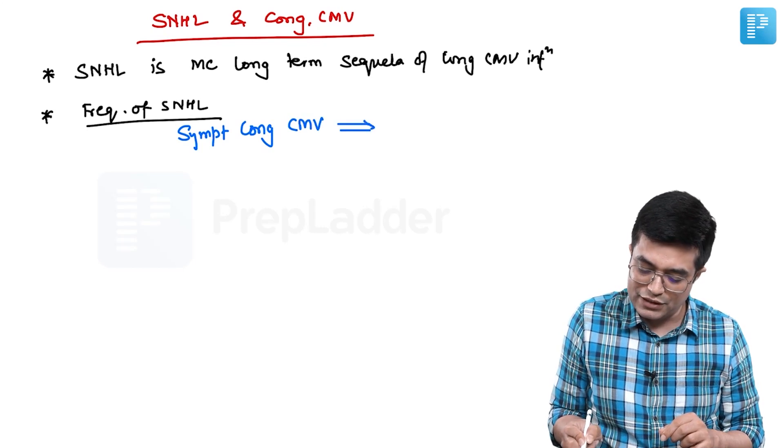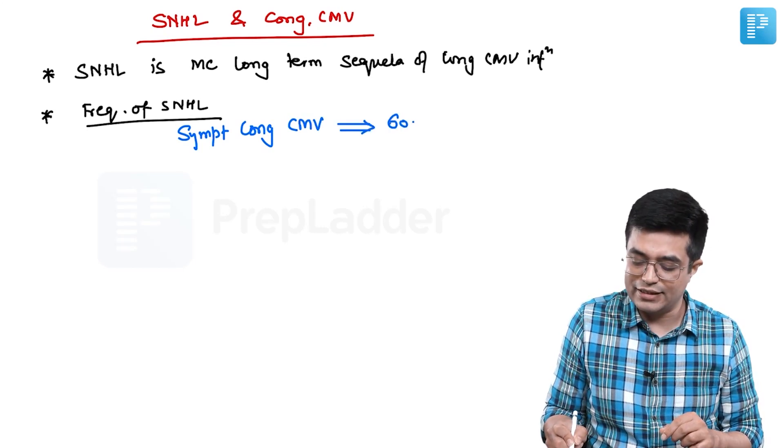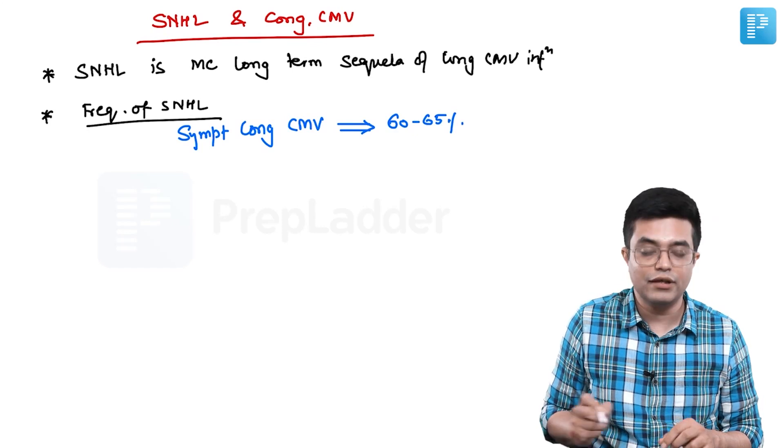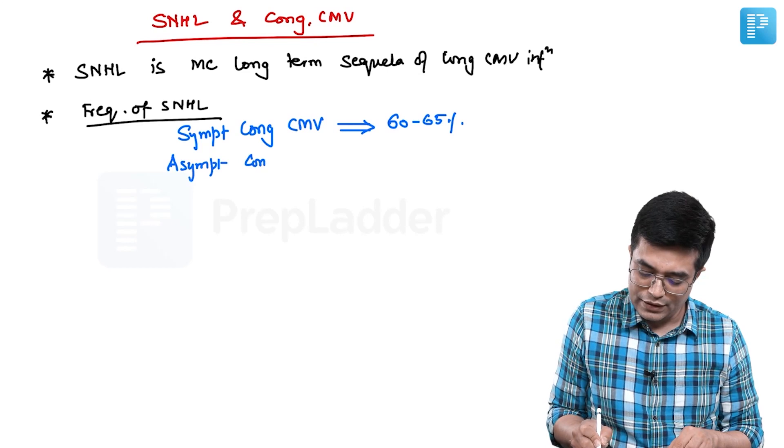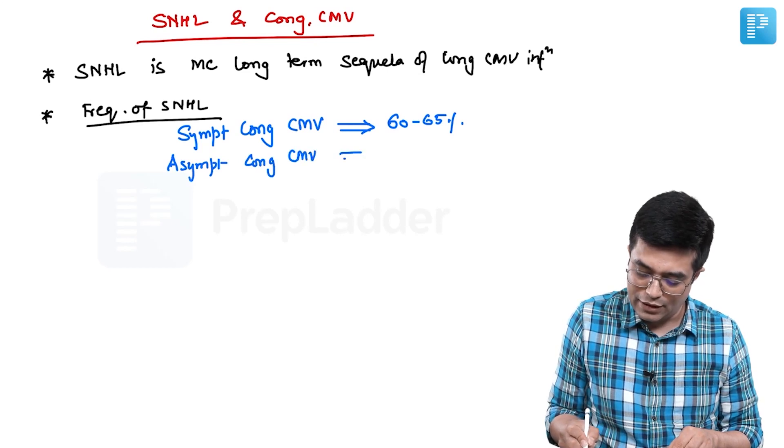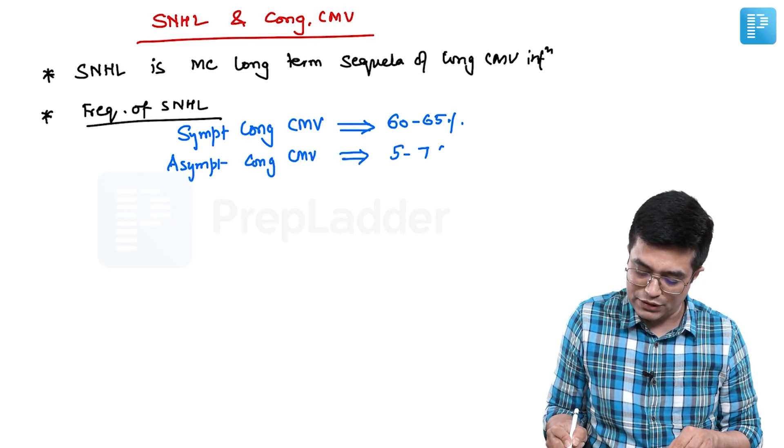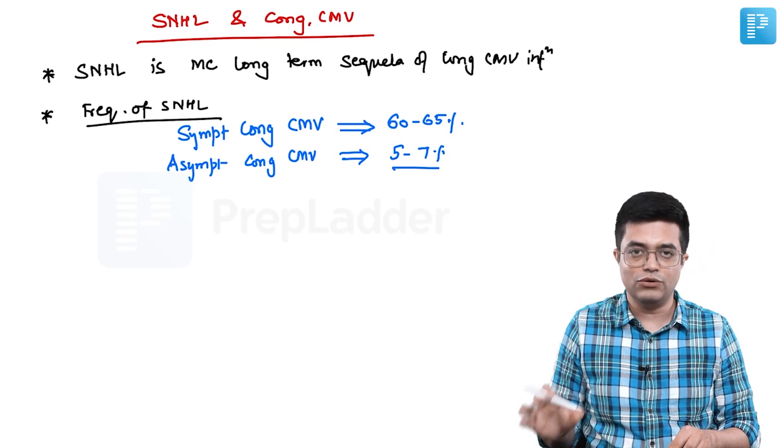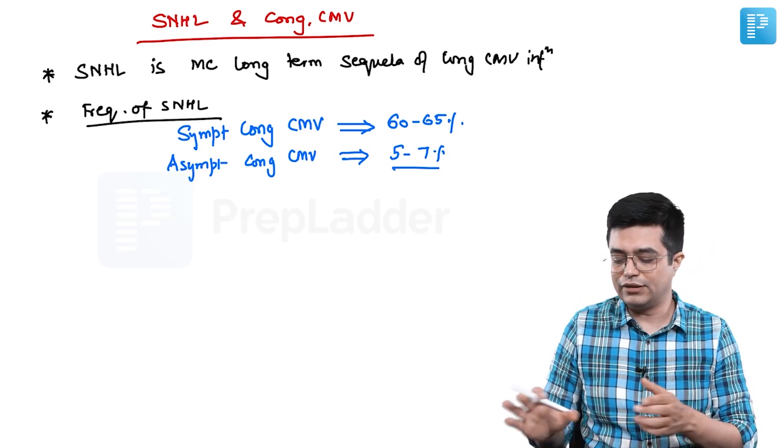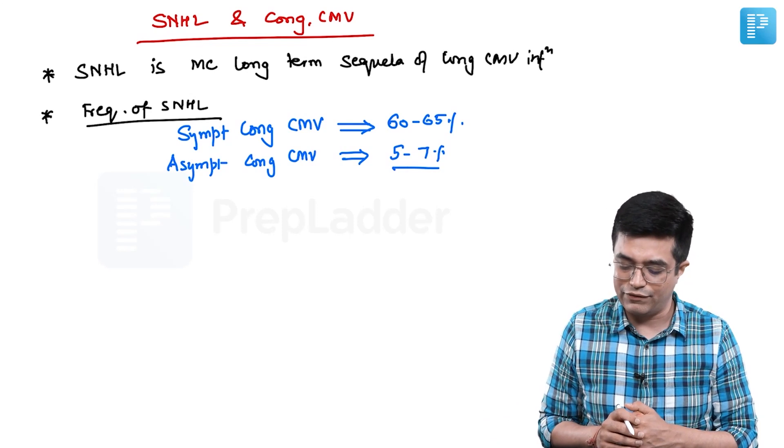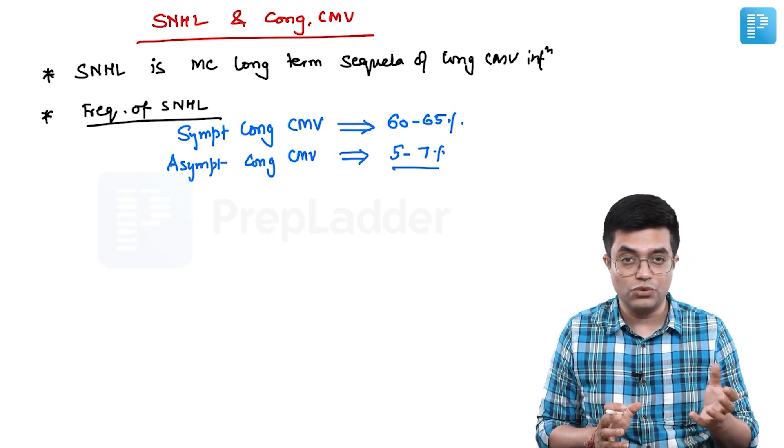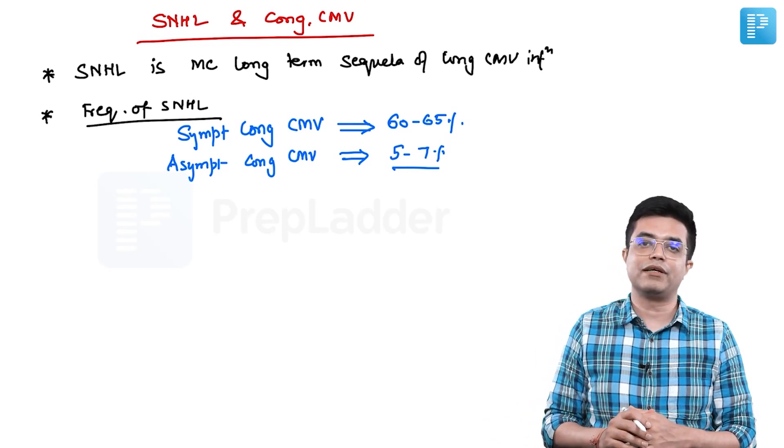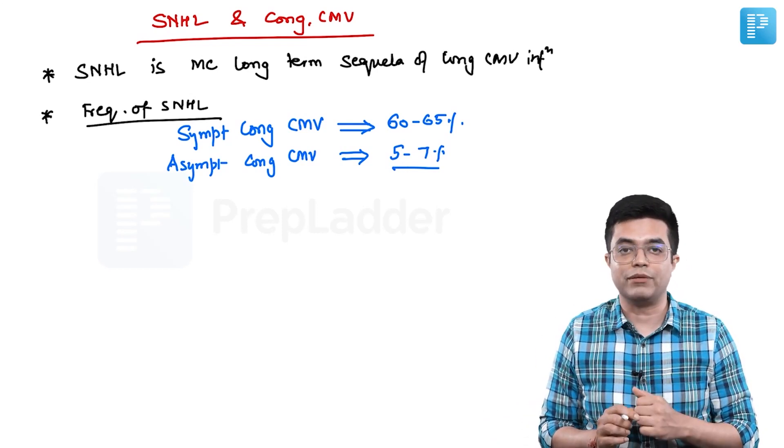Whereas if it is asymptomatic congenital CMV, it is about 5 to 7 percent. Cloherty gives a single value of 5 percent, but other textbooks and other articles give a range of 5 to 7 percent. So one of the options which was true was it can even happen in asymptomatic patients - that is a true statement.